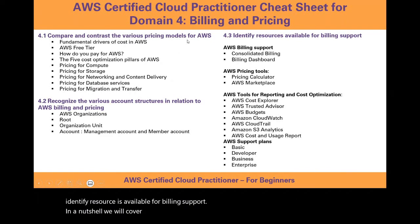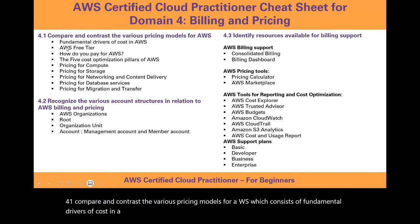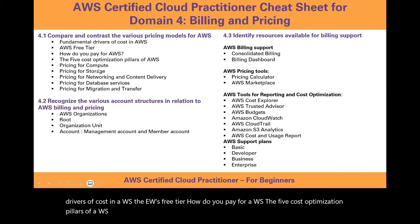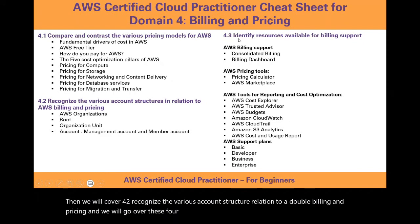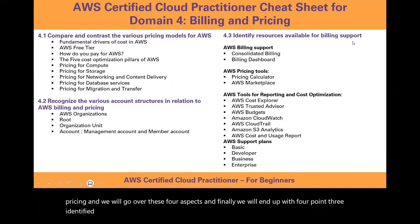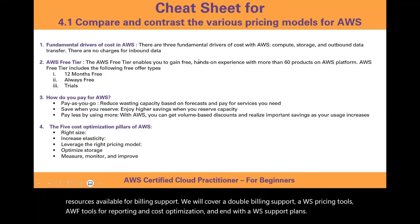For 4.1, we will cover the fundamental drivers of cost in AWS, the AWS Free Tier, how you pay for AWS, the five cost optimization pillars, and pricing for various AWS services. For 4.2, we will go over four key aspects of account structures. For 4.3, we will cover AWS billing support, pricing tools, tools for reporting and cost optimization, and AWS support plans.